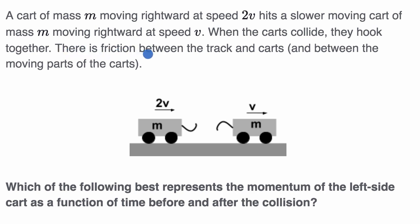There is friction between the track and carts and between the moving parts of the carts. Which of the following best represents the momentum of the left side cart as a function of time before and after the collision?